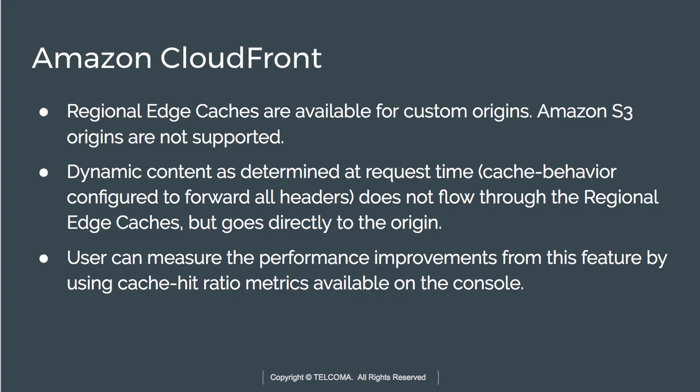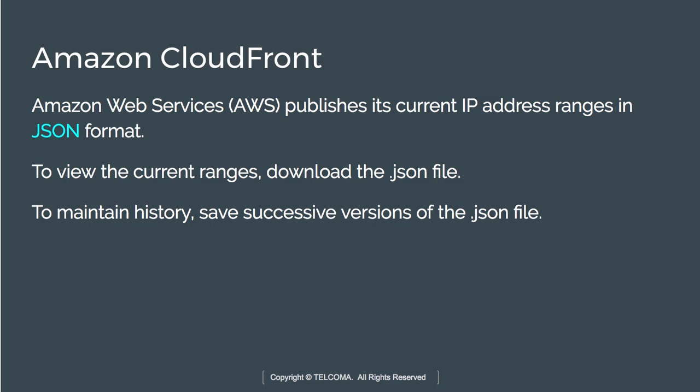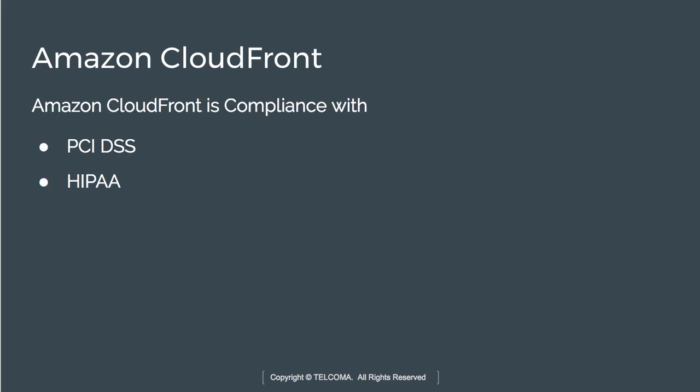Amazon Web Services publishes its current IP ranges in JSON format. To view the current ranges, you can download the .json file. To maintain history, you need to save successive versions of the .json files.